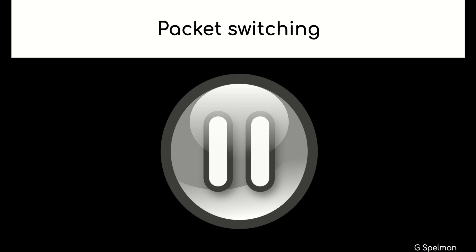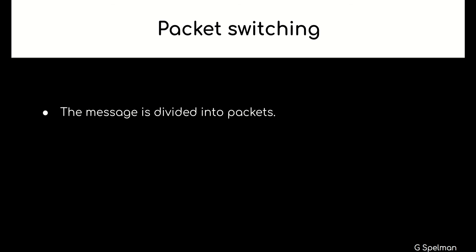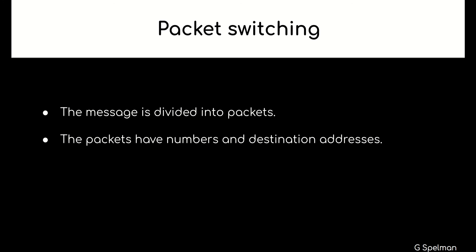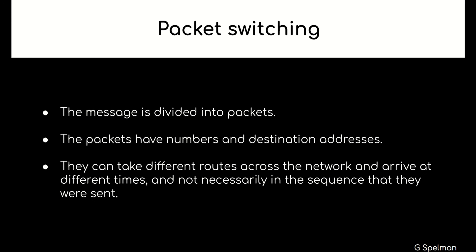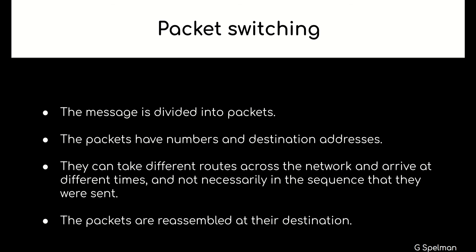Packet switching. The message is divided into packets. The packets have numbers and destination addresses. They can take different routes across the network and arrive at different times, and not necessarily in the sequence that they were sent. The packets are reassembled at their destination.